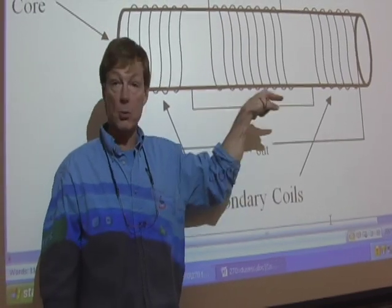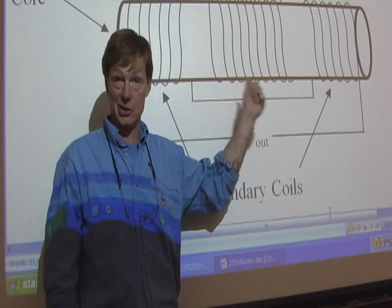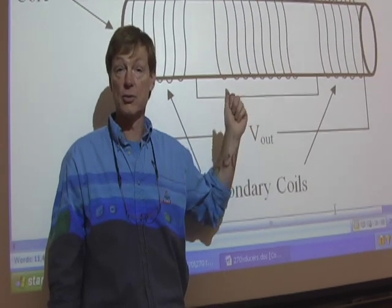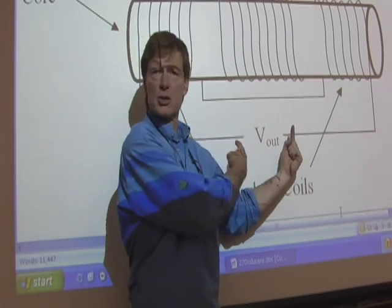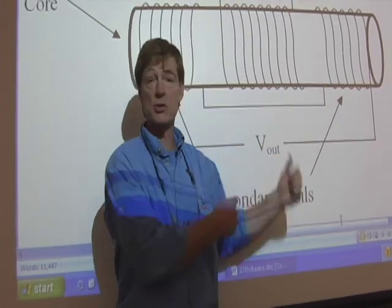Linear means it moves in one line. Variable means that it can change direction and it can move. Differential transformer means I've got a transformer and I'm looking at the differential voltage output of the two secondary coils.